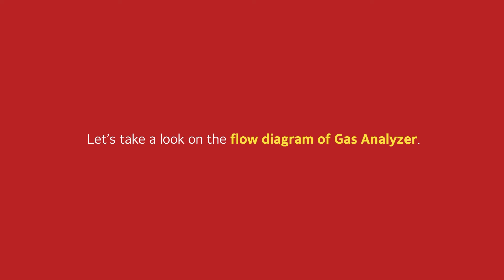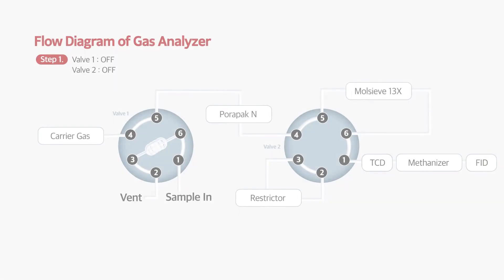Let's take a look at the flow diagram of the gas analyzer. When all valves are off, the sample is loaded in the loop. Turning on valve one, the sample flow is switched for injection. Hydrogen and oxygen are eluted earlier in Porapak N column and separated in molecular sieve column and then detected by TCD. Carbon monoxide is converted to methane in the methanizer and detected by FID.